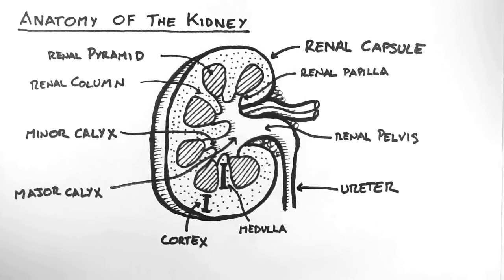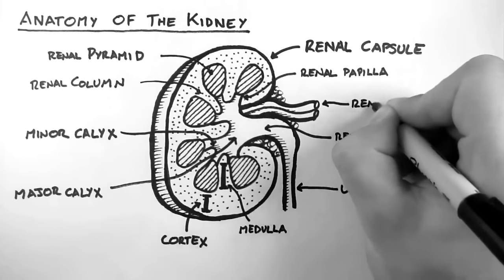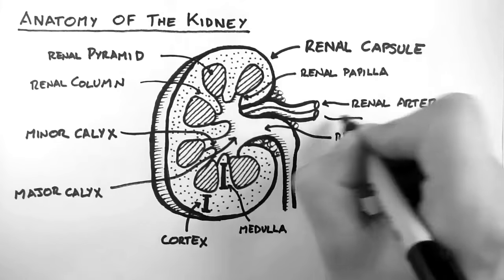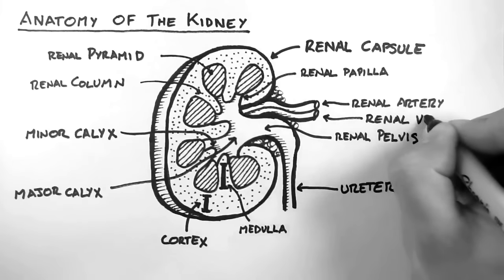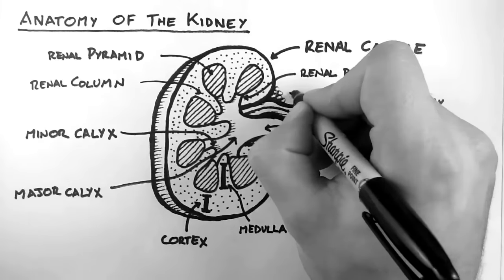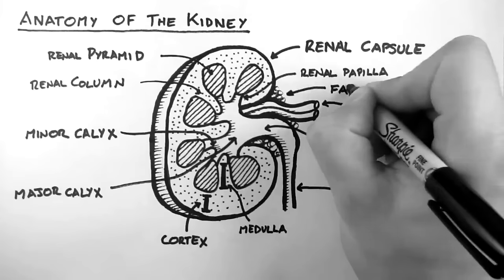The last thing we need to look at here is the blood supply to and from the kidney. We have the renal artery bringing blood to the kidney, and the renal vein taking blood from the kidney. The area where the renal artery, the renal vein, and the ureter enter the kidney is called the hilum. And surrounding the hilum, we find perinephric fat.